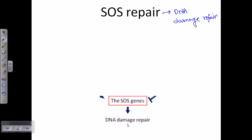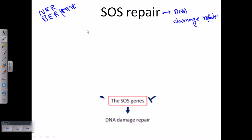SOS genes prevent DNA damage from sources such as UV radiation or oxidative stress. During that time, DNA has to be repaired, and for repairing DNA a cell can rely on nucleotide excision repair (NER), base excision repair (BER), or mismatch repair (MMR). These are the different repair mechanisms that a cell can use.